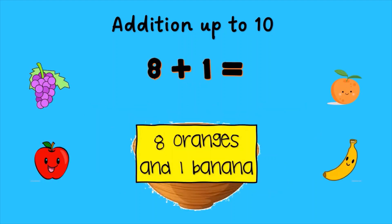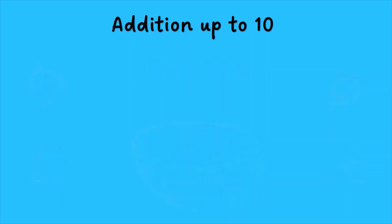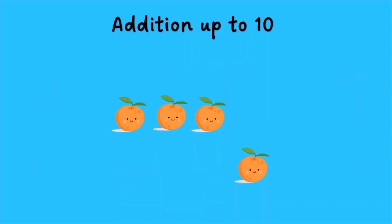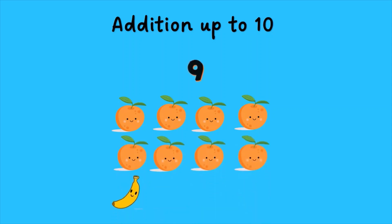Eight oranges and one banana. One, two, three, four, five, six, seven, eight, nine. The sum is nine.